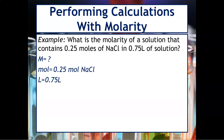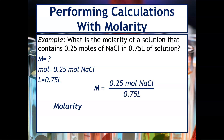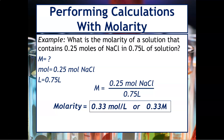Everything is already in the appropriate units — moles and liters — so we just use our formula. Molarity equals 0.25 moles of sodium chloride over 0.75 liters, which gives a molarity of 0.33 moles per liter, or 0.33 M. That is the simplest type of problem.